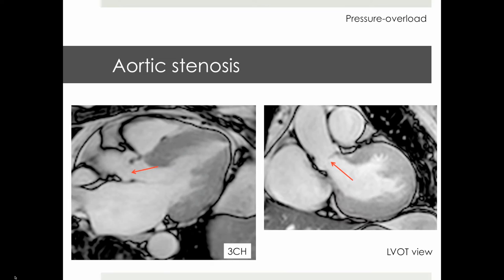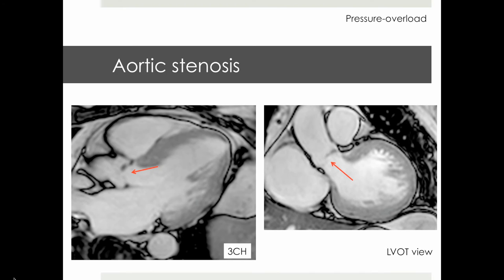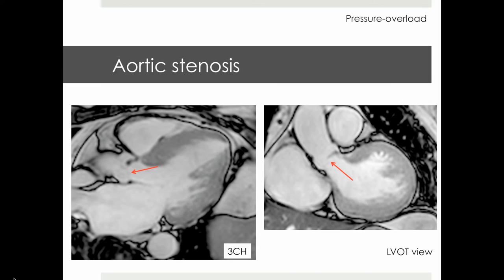Aortic stenosis due to a tight aortic valve is another example of pressure overload hypertrophy, which again most commonly results in a concentric increase in LV thickness.